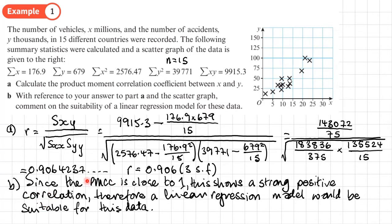In summary, this means you could work out the regression line for this data and predict results using it, because of the strong positive correlation. However, we must be careful about extrapolating — trying to predict results outside the range of values collected.